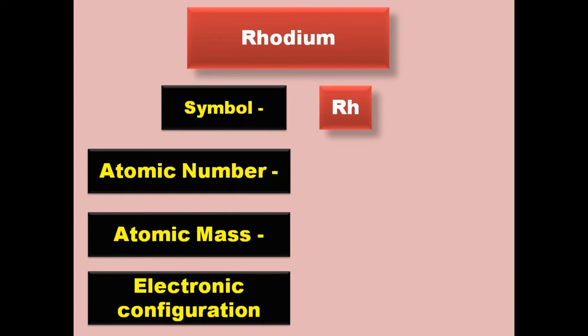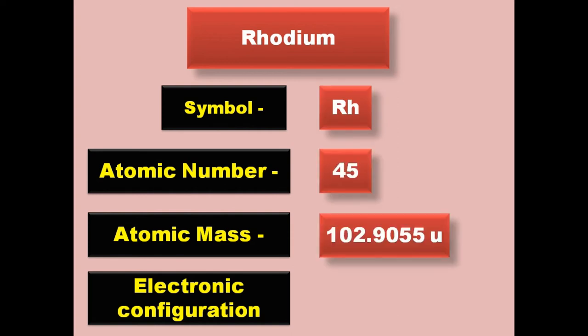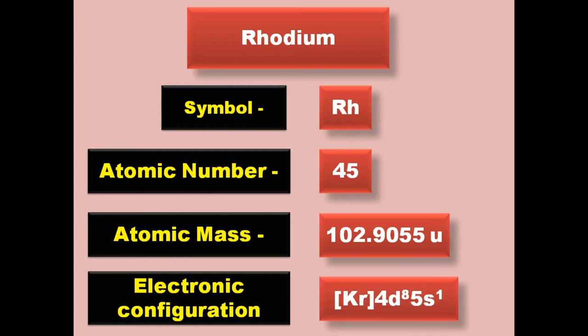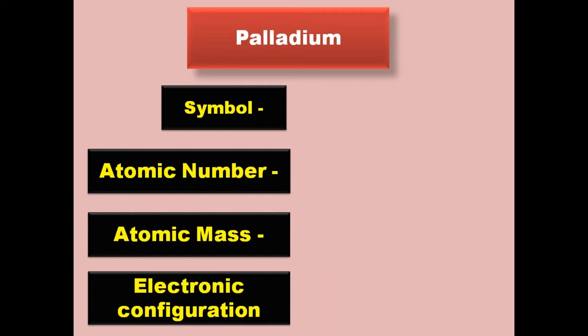Rhodium has symbol Rh, atomic number 45, atomic mass 102.9055, electronic configuration [Kr] 4d8 5s1. Rhodium is a transition metal and exists in solid form at room temperature.